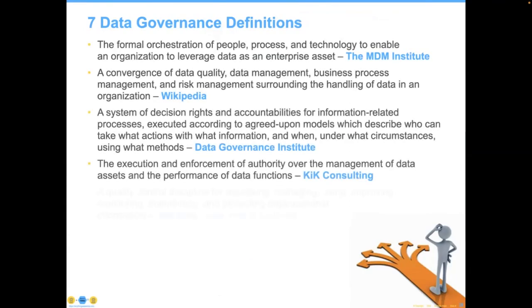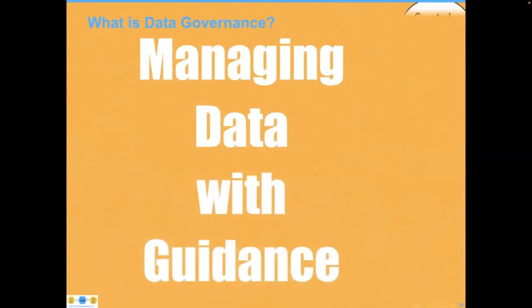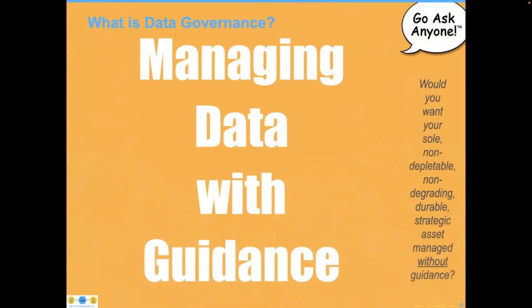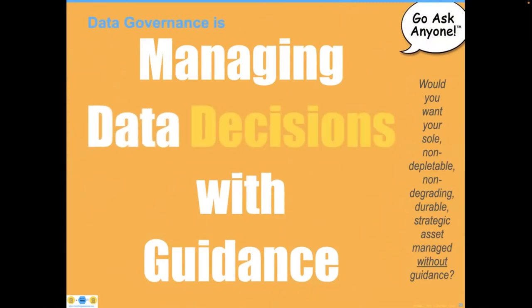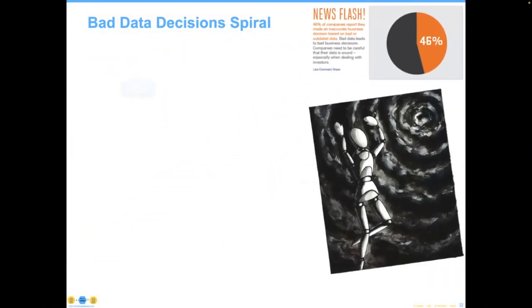So I like to use a very short definition: data governance is managing data with guidance. That immediately begs the question — would you want your only non-degrading, non-depletable strategic asset managed without it? The answer is, of course, no. As we work our way up the food chain in our organizations, people get further away from the actual data. They think they're not involved, but in fact they are — they are making data decisions and they don't know it. This leads to what I call the bad data decision spiral: business decision makers and technical decision makers are not data knowledgeable, which leads to bad data decisions, poor treatment of organizational assets, and poor organizational outcomes.